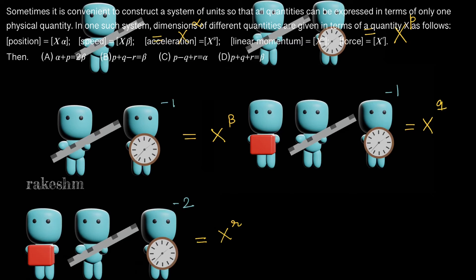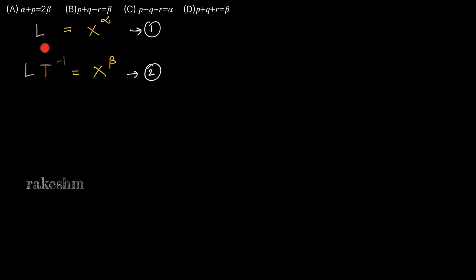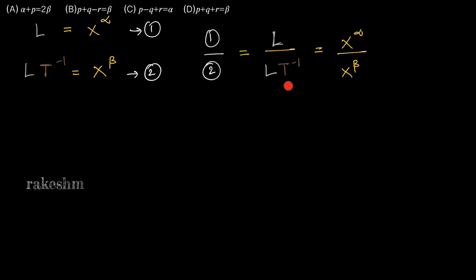He has given us four options and this is a multiple correct option question, so we need to see which options are right. He is asking us the relation between the constants alpha, beta, p, q, and r. We have L equal to x power alpha and L T power minus one equal to x power beta. Dividing these two equations, we get L divided by L T power minus one equal to x power alpha by x power beta, giving us T equal to x power alpha minus beta.